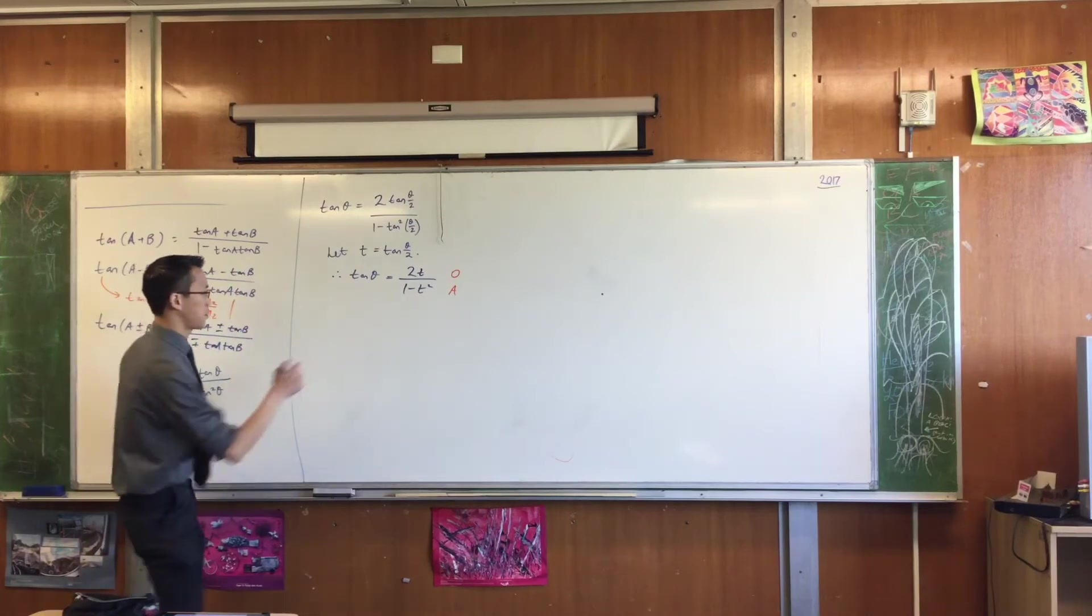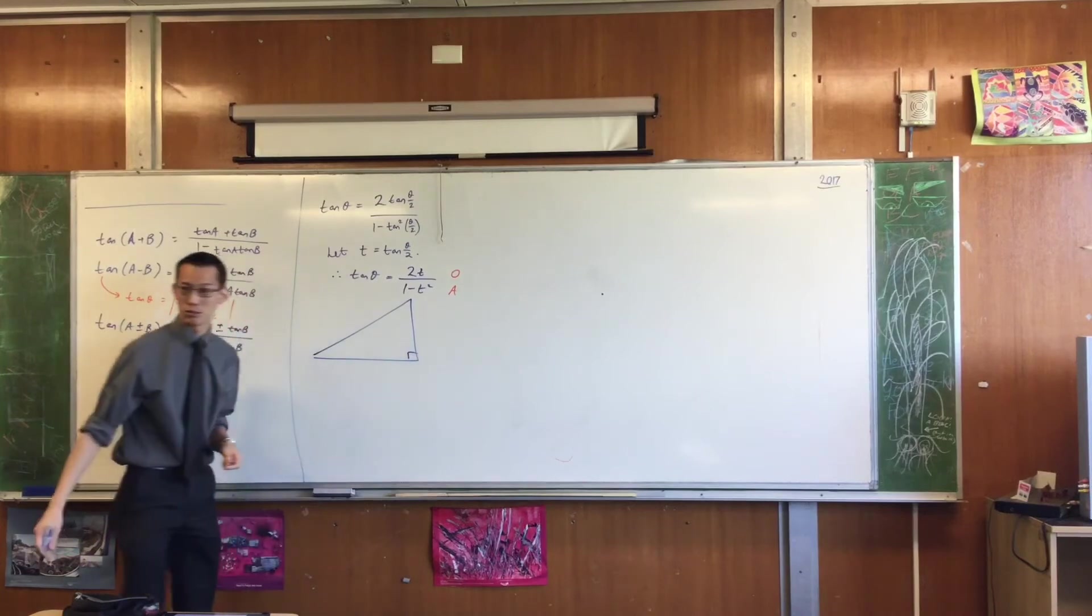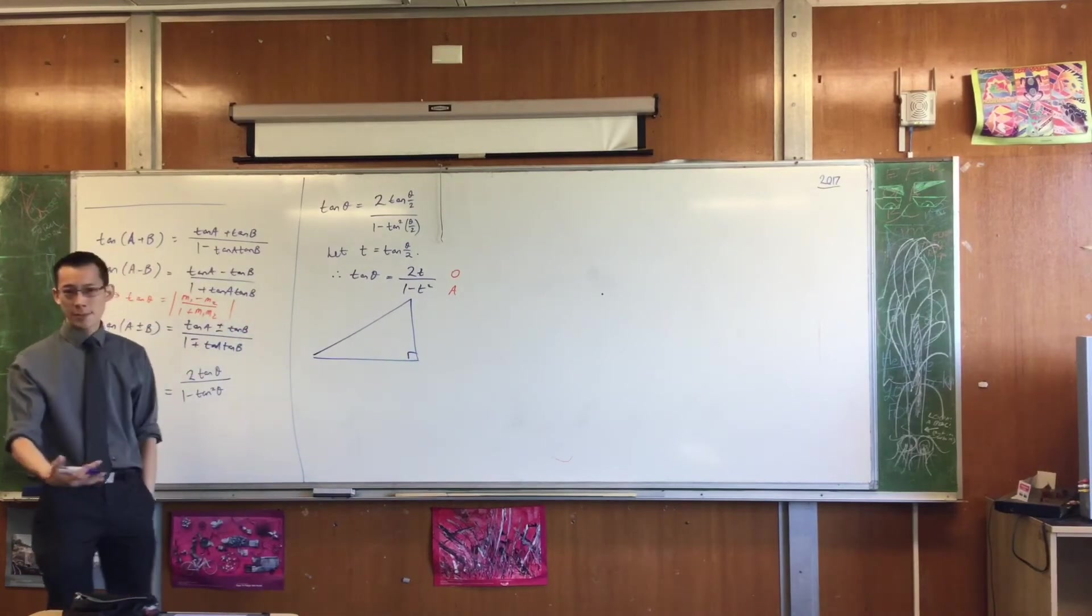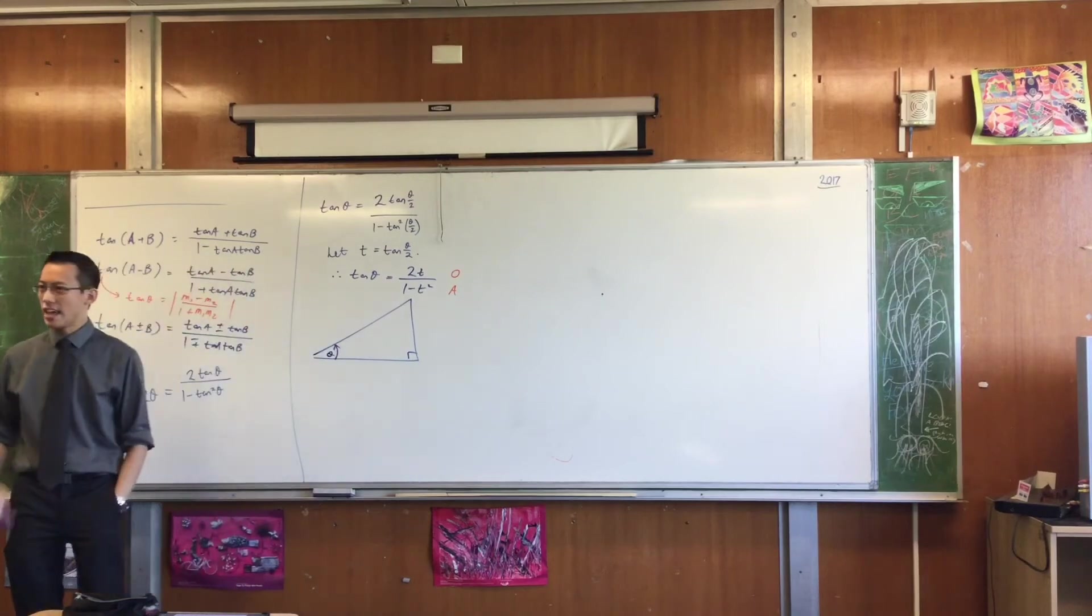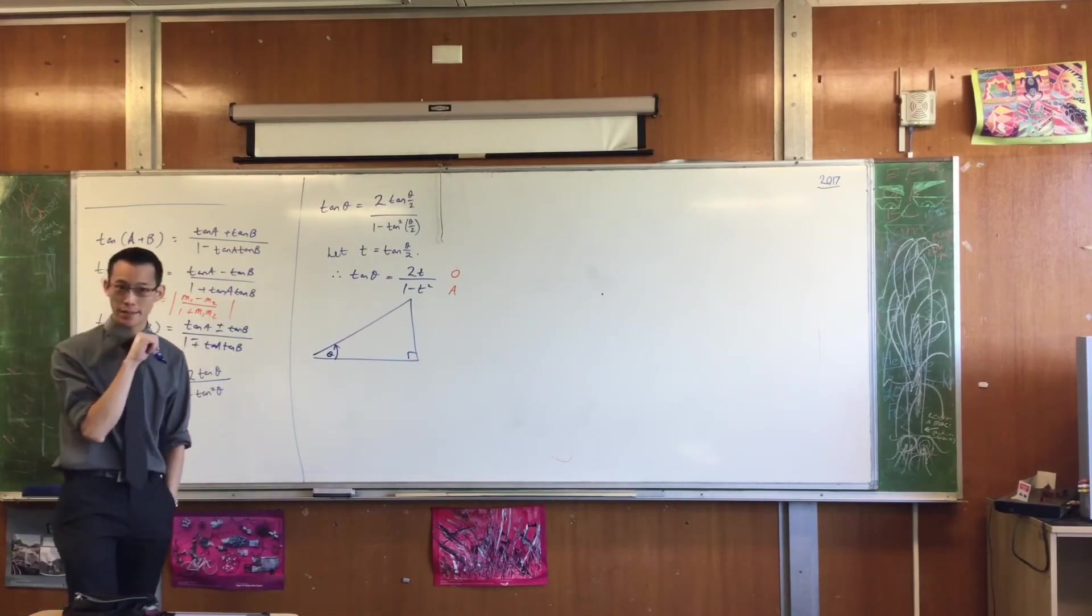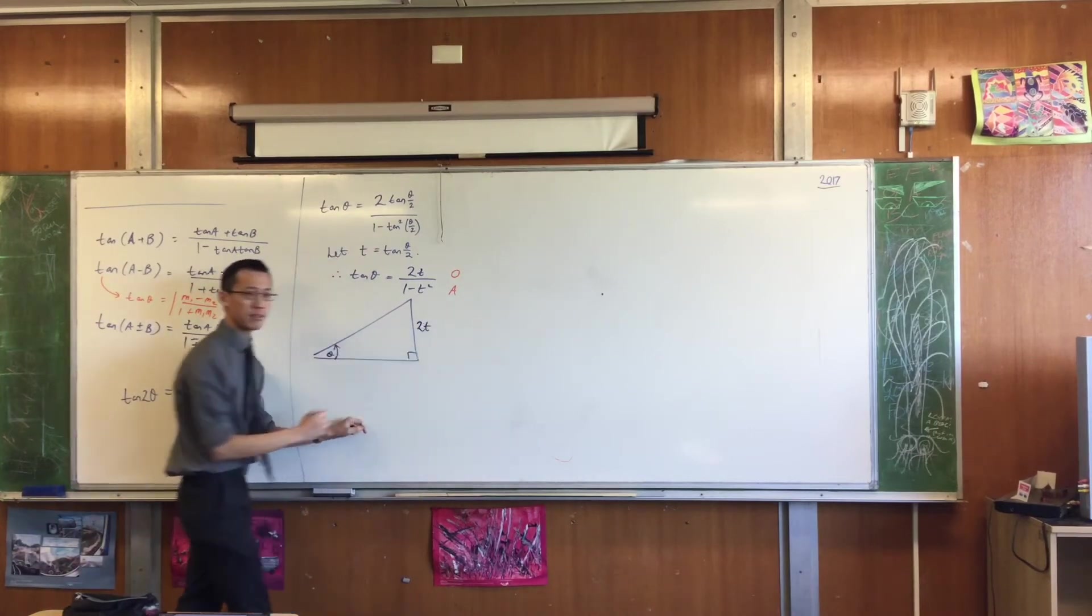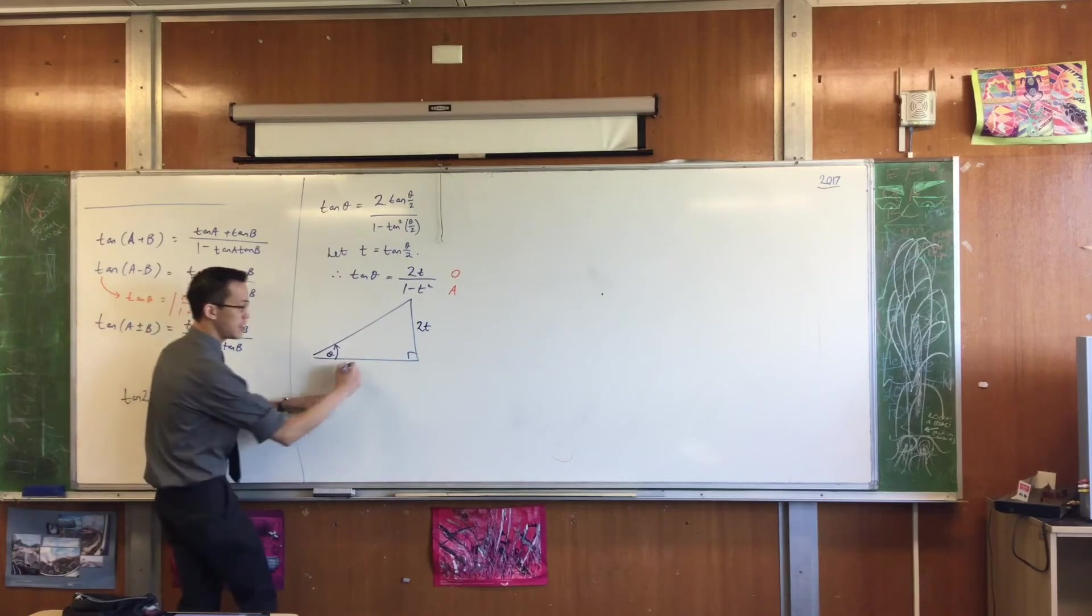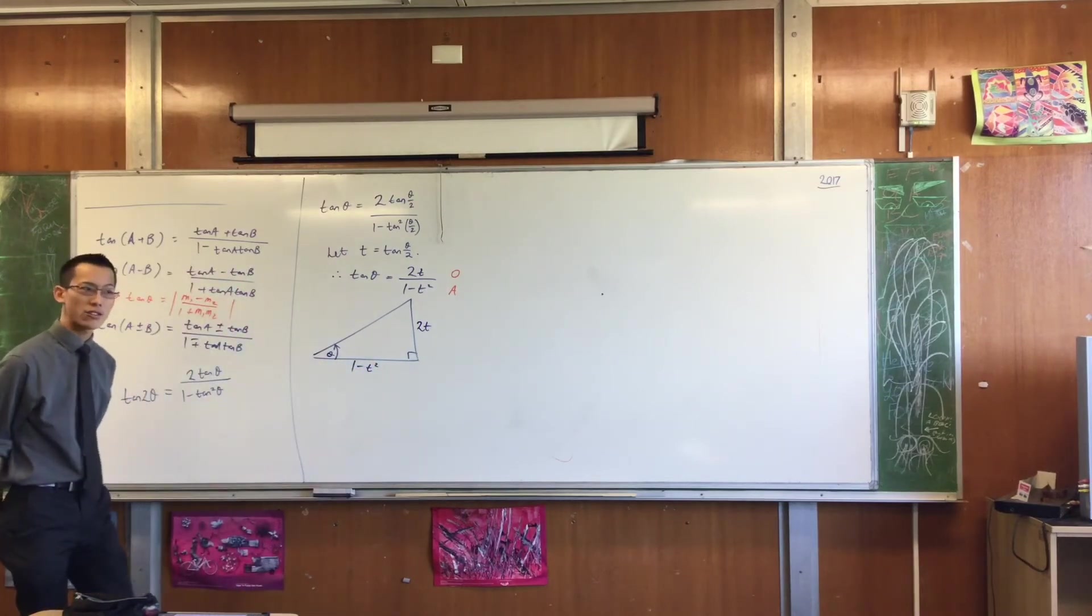Let's draw that triangle. So underneath here, if you draw yourself a right angle triangle like so, let's put θ over here in the corner. If tan θ is 2T / (1 - T²), then here's the opposite side over here, 2T, and here is the adjacent side, 1 - T².